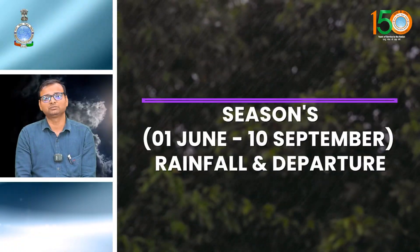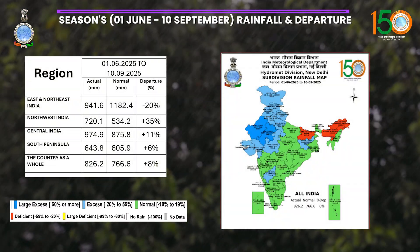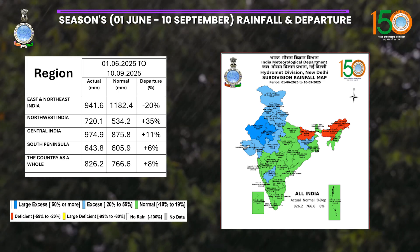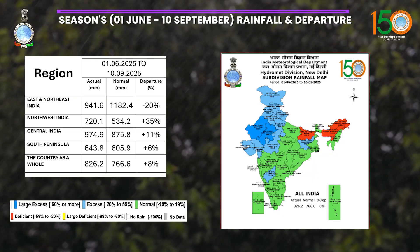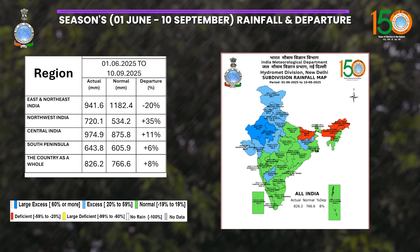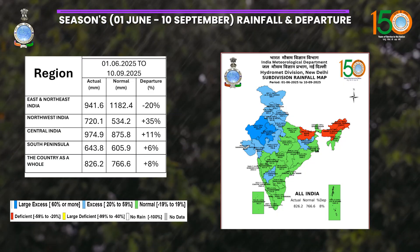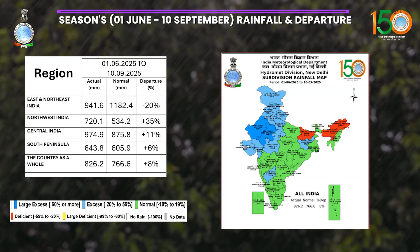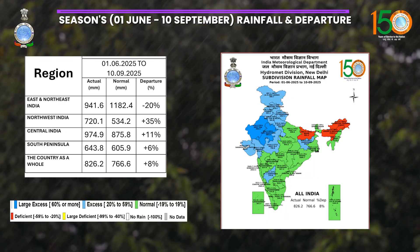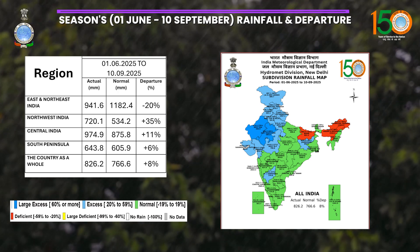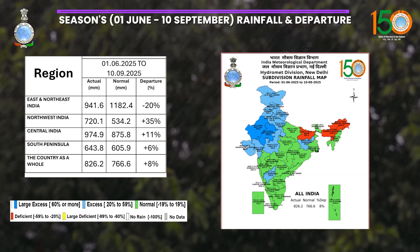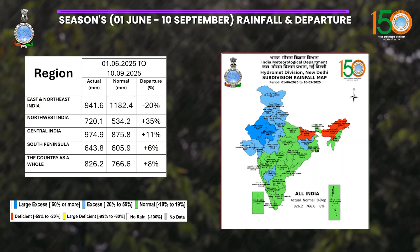Now if we look at the southwest monsoon season as a whole, in this map you can see that the country as a whole received 8% above normal rainfall till 10th of September. In central India, northwest India and in the Himalayan regions, all are shown in dark blue color, meaning they received large excess to excess rainfall. The only subdivisions which received below deficient rainfall were Bihar, Assam-Meghalaya and Arunachal Pradesh. In this table you can clearly see that east and northeast India received minus 20%, that is 20% less rainfall than the long period average. The remaining three homogeneous regions all received more than normal rainfall.